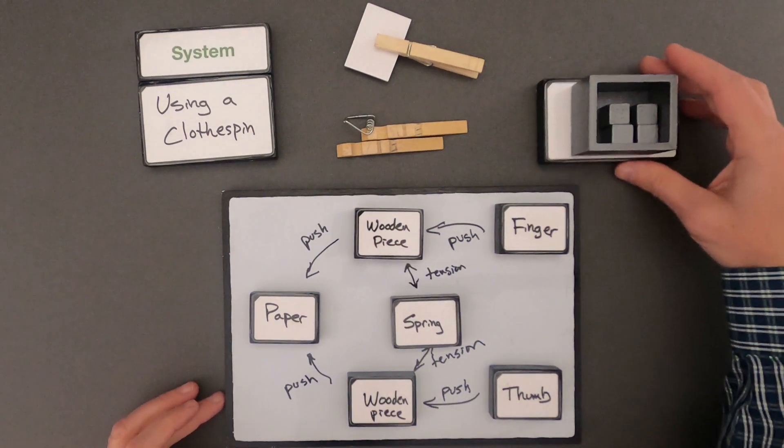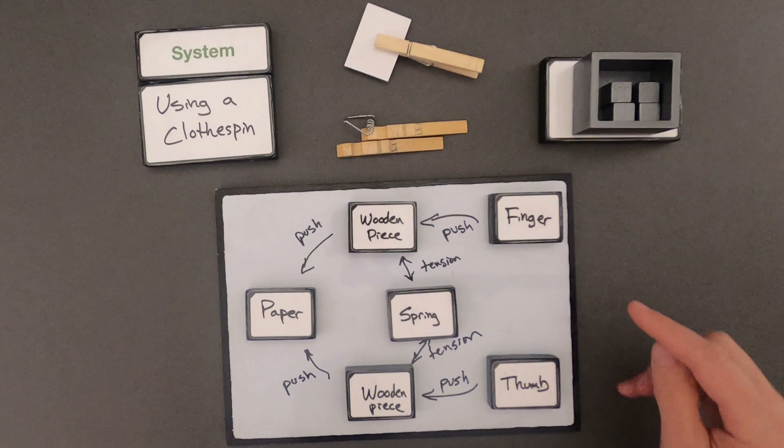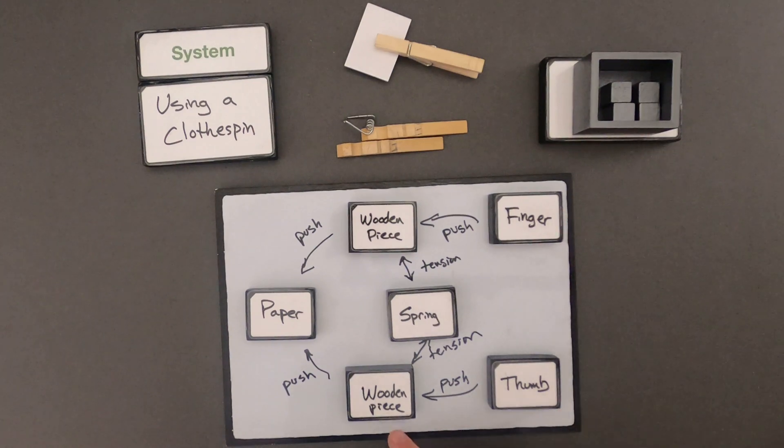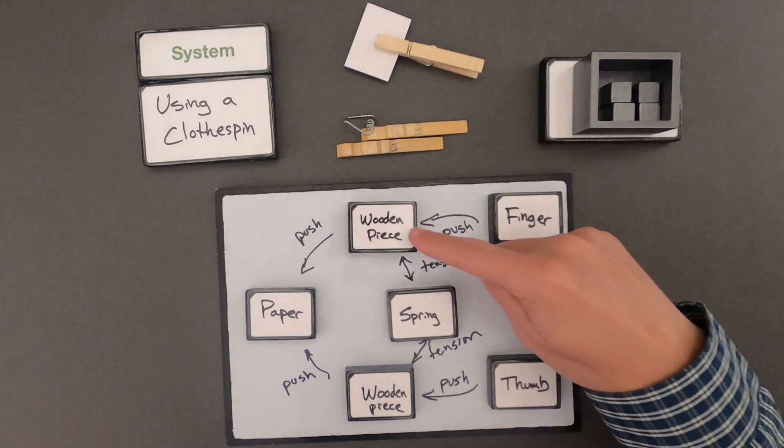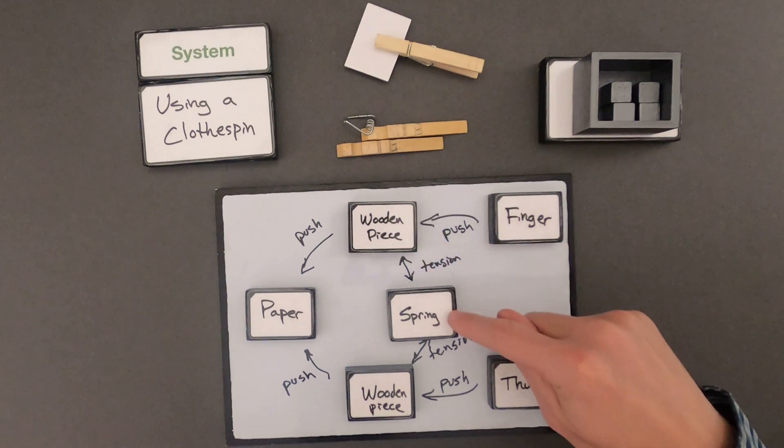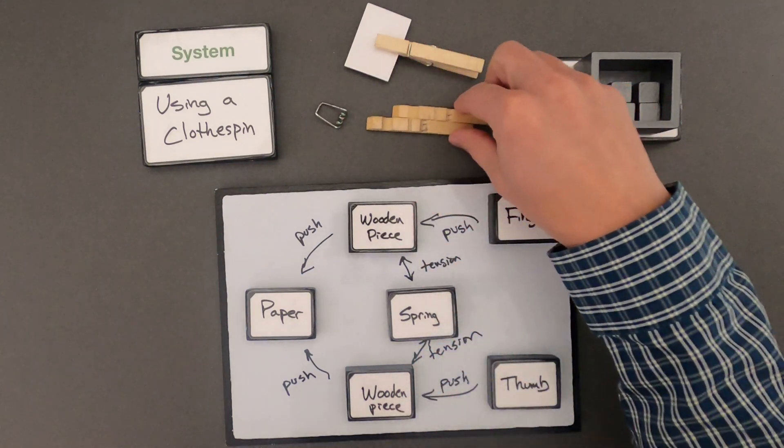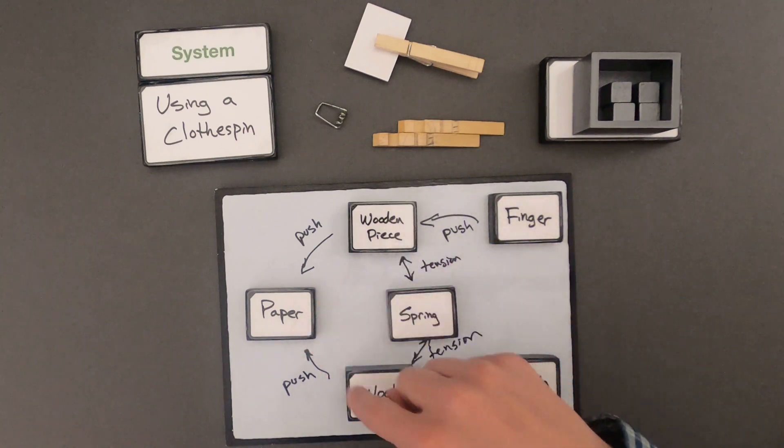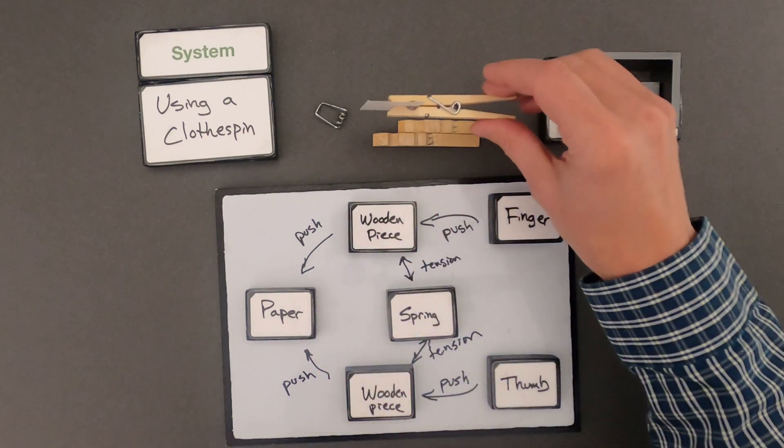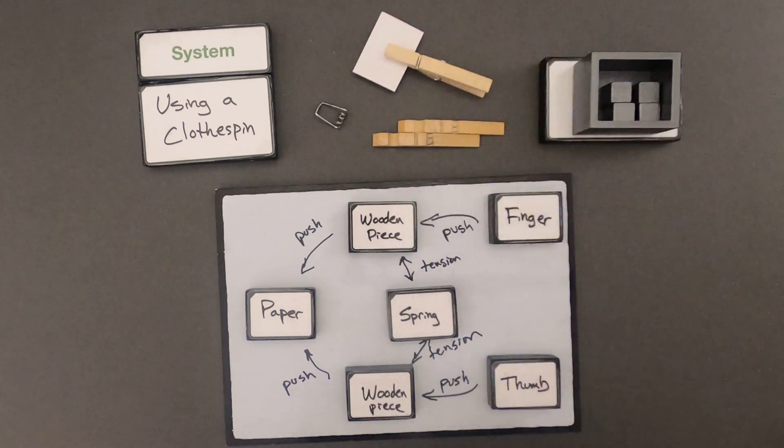Okay, this is my thinking for the system of using a clothespin. My finger and thumb both push on the wooden piece. The wooden piece is held in tension with the spring. So if I take that spring out, there's no tension here. And then the wooden piece is going to push on the piece of paper from either side, and that's how it holds it.